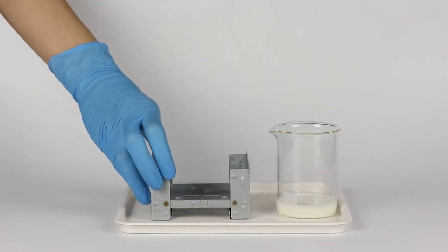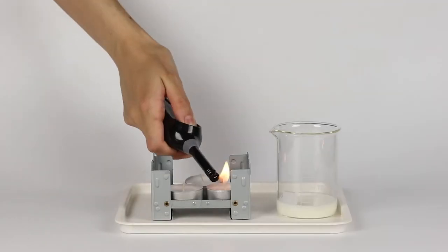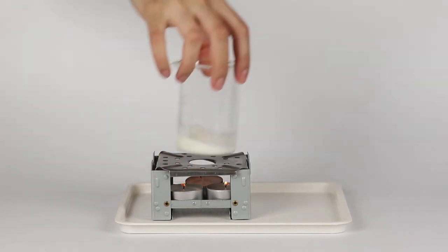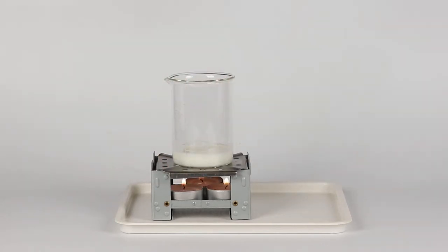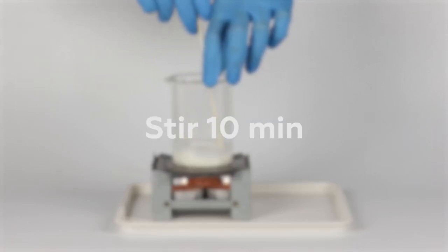Then put the three candles into the stove. Take off your protective gloves and light the candles. Cover the stove with the flame diffuser and place the beaker on top of it. Put your protective gloves back on and stir the mixture for 10 minutes using the wooden stick.